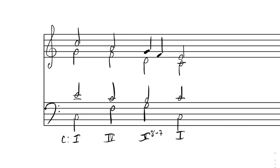We'll begin our exploration of secondary dominance with this simple chord progression. It's a very simple progression going from our tonic to our predominant 4 chord to a dominant 5, which matures to a 5-7 by use of a passing 7th, and then finally resulting in the tonic. What I'd like to do is take each of these middle harmonies—the 4 chord and the 5 chord—and show how secondary dominance can highlight or enhance their arrival. We'll start with the 5 chord, as it's typically the diatonic chord most likely to be treated with a secondary dominant.